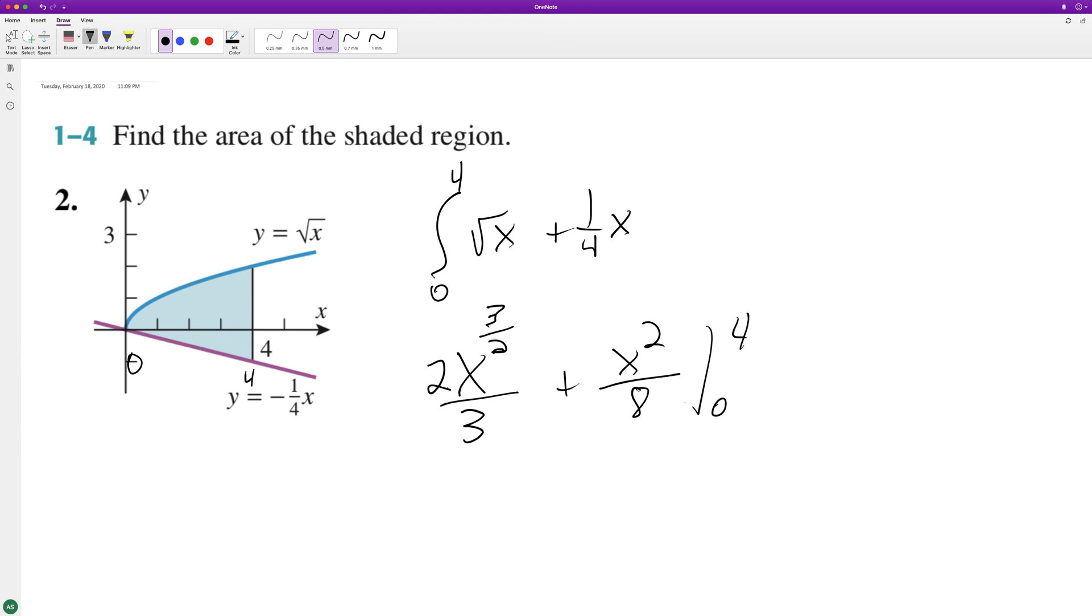So two-thirds times four raised to the three halves, plus sixteen over eight, minus two-thirds times zero - so that's zero plus zero - so that's nice, that works out good.